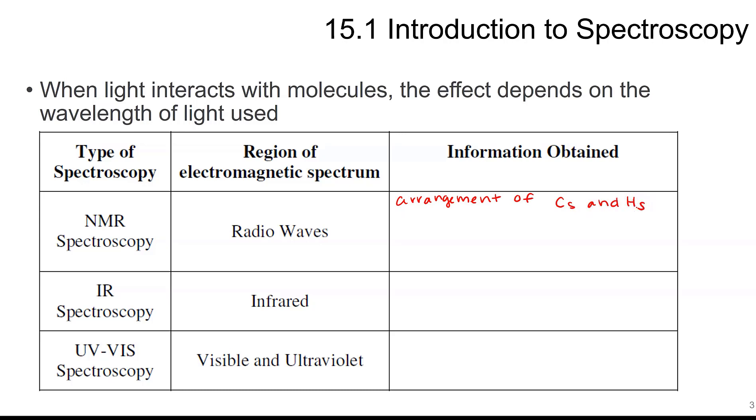NMR tells us how carbons and hydrogens are arranged in a compound. IR spectroscopy uses infrared, and that tells us what functional groups are present. UV-Vis, which we won't look at a whole lot, is visible and ultraviolet light, and that lets us know about any conjugated pi systems.